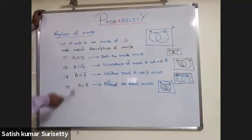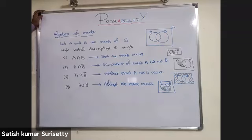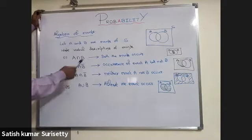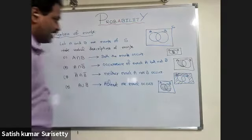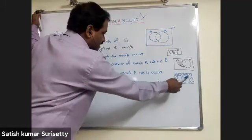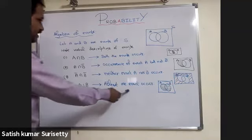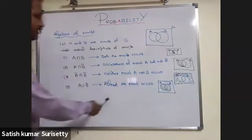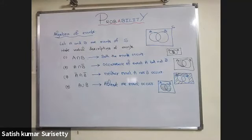The region for A intersection B bar is only A — that is, the part of A outside of B. Whereas A bar intersection B bar is the region outside of both A and B. A union B means at least one event occurs, and the region covers the entirety of A as well as B.